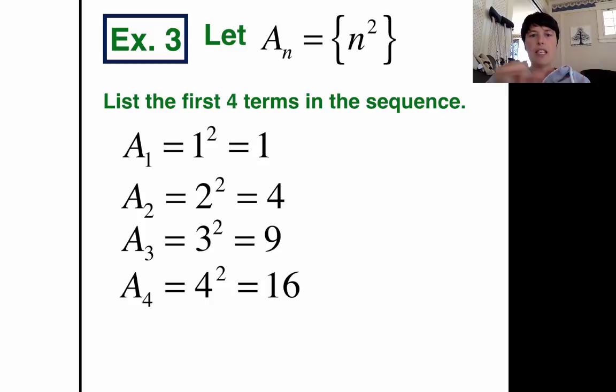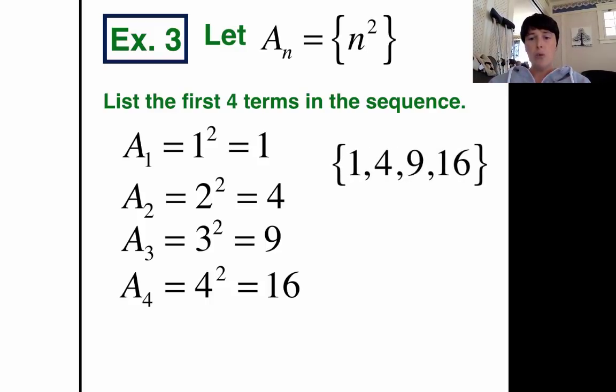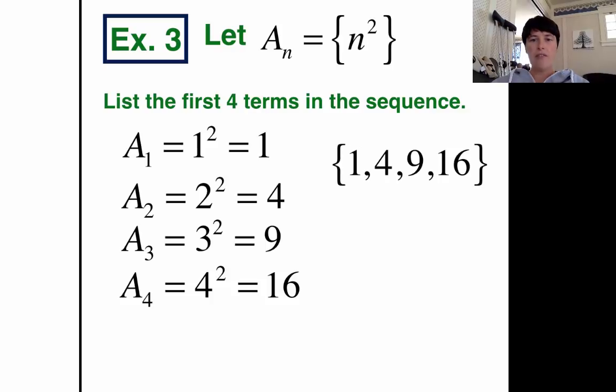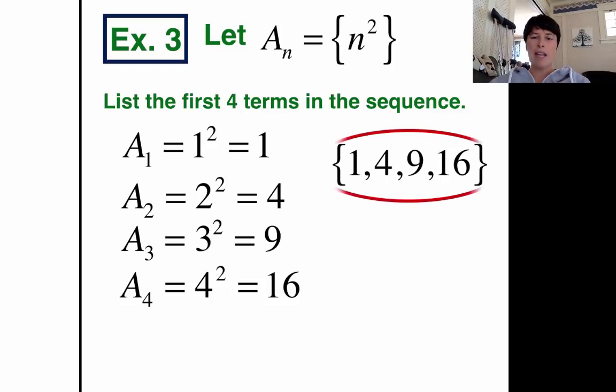But look how I'm going to write this. The question said to list the first four terms. So I'm going to list it: 1, 4, 9, 16 with commas in between. And brace around it. I'm going to put some braces on it. So 1, 4, 9, 16. That's my answer. I'll circle that. That's the solution to this problem.